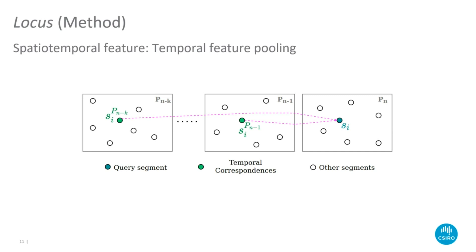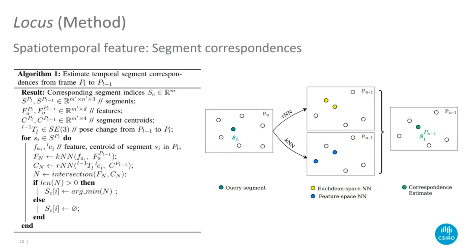With the aim of encoding the temporal consistency of segments, we carry out a second stage of feature pooling over the segment correspondences between frames. Frame-to-frame segment correspondence estimation is carried out as in algorithm 1. For each segment in the current frame, we obtain two sets of nearest neighbors from the previous frame using Euclidean and feature space distance respectively. The correspondence estimate is taken as a segment in the intersection of these sets, which minimizes both feature space and Euclidean space distance.